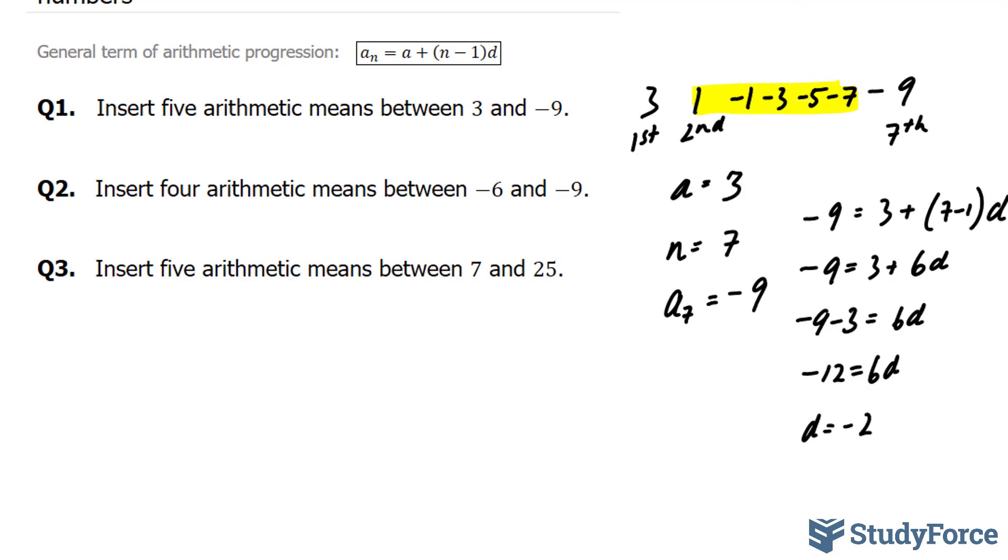Let's move on to question 2. They want us to insert 4 arithmetic means between negative 6 and negative 9. 4 arithmetic means means that we have 6 numbers in this series. This being the first, this being the sixth.